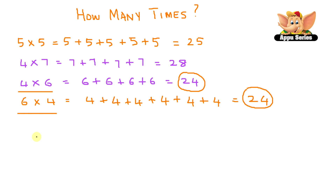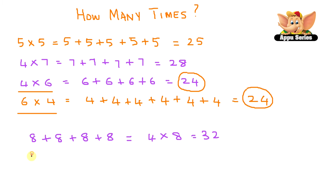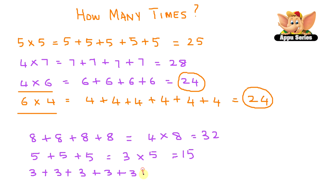Now let's try doing it the other way. Let's make some addition problems into multiplication problems. Here's 8 plus 8 plus 8 plus 8 plus 8 — you're adding 8 four times, so that's 4 times 8 equals 32. Here's another one: 5 plus 5 plus 5 plus 5, so that would be 3 times 5 equals 15. Here's another one: 3 plus 3 plus 3 plus 3 plus 3 plus 3 plus 3, which would be 6 times 3 equals 18.